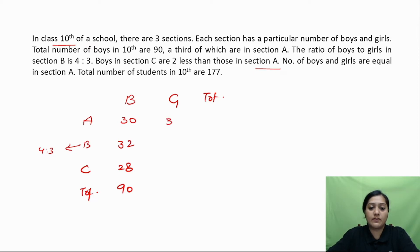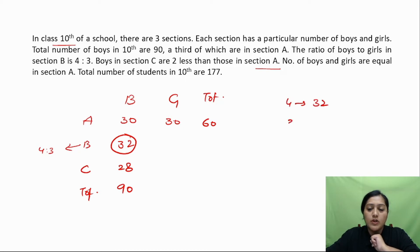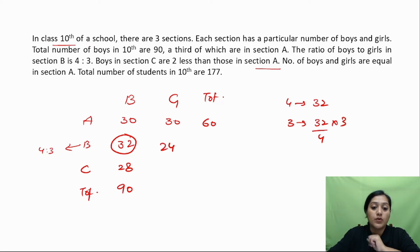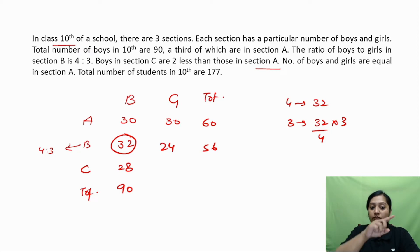Number of boys and girls in Section A are equal, so girls in A are also 30, giving a total of 60 in Section A. Now for Section B: boys are 32 and the ratio is 4:3, so using the unitary method, 4 parts = 32, meaning 1 part = 8, and 3 parts = 24 girls.